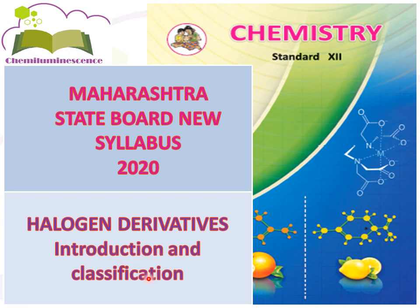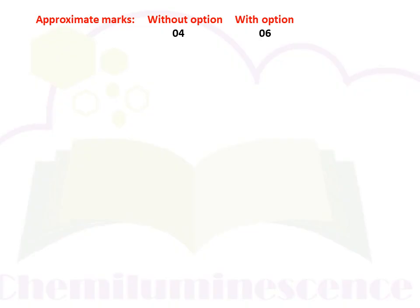We will see the introduction and classification of halogen derivatives. Before going to the introduction part, we will see how much weightage this unit has in the board exam. Approximately, without options this unit has 4 marks, and with options this unit has 6 marks.